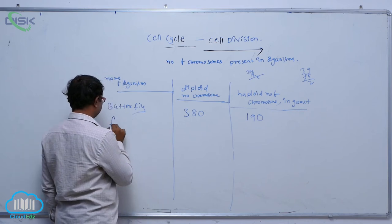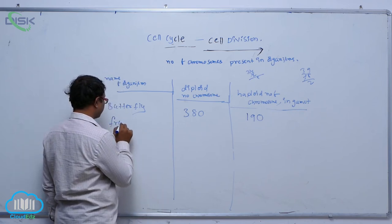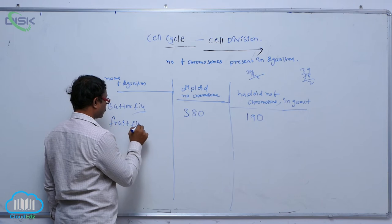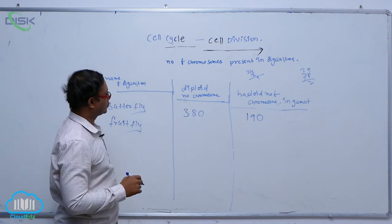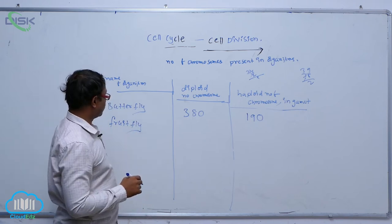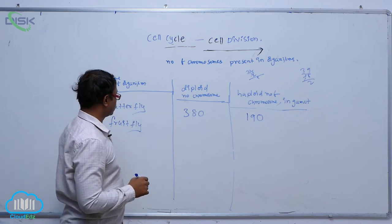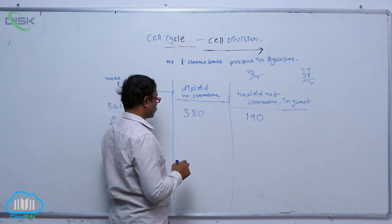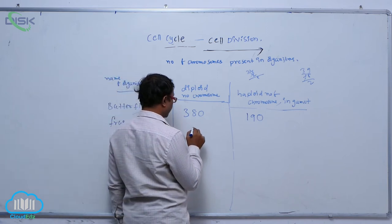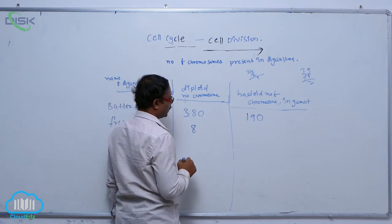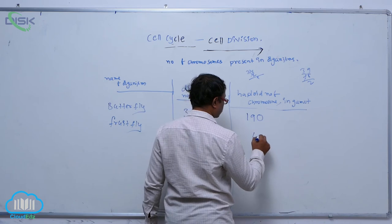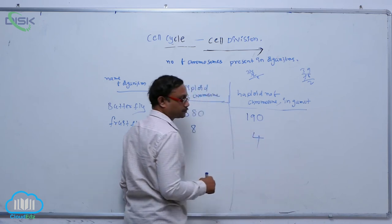In the fruit fly, the diploid number of chromosomes is 8, and the haploid number of chromosomes in the gamete is 4.